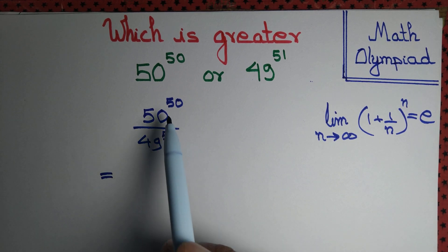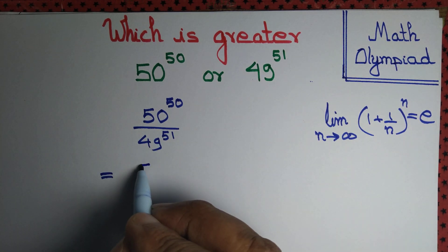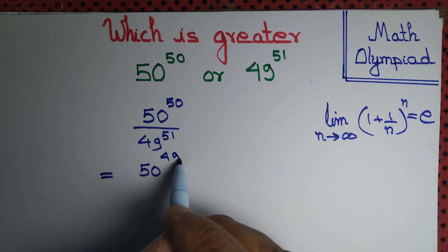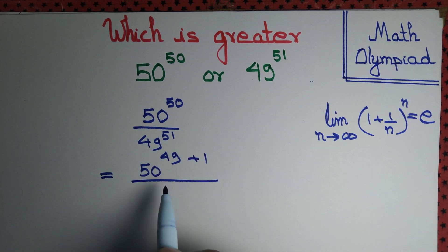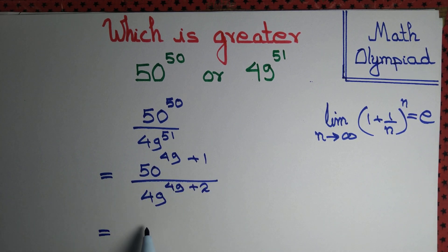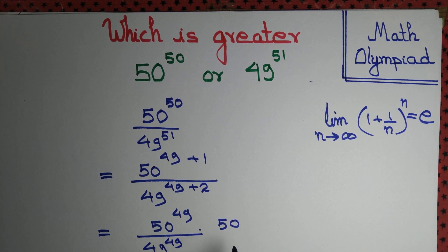Let's try to write everything in terms of 49. So 50^50 can be written as 50^(49+1), and 49^51 can be written as 49^(49+2). That equals 50^49 × 50, divided by 49^49 × 49², by the law of indices.